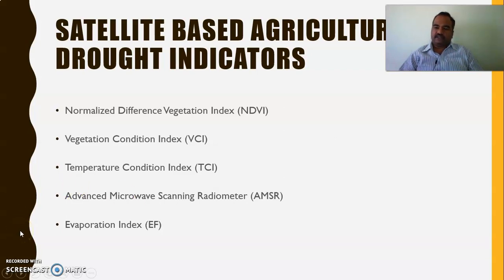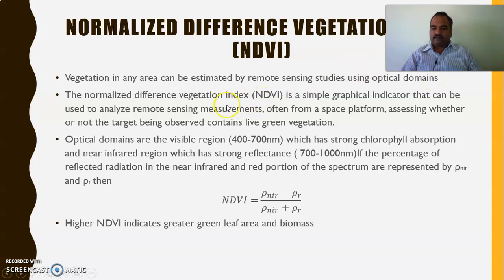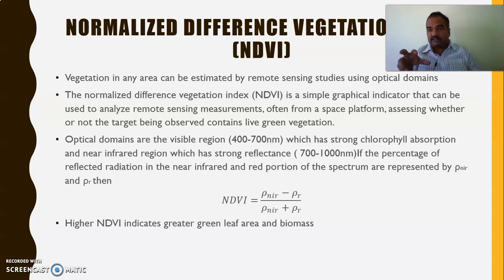The first indicator is the normalized difference vegetation index, generally referred to as NDVI. Since we have been employing satellite images to understand vegetation in any particular area, vegetation in any area can be estimated by remote sensing studies using optical domains. NDVI is a simple graphical indicator used to analyze remote sensing measurements, often from a space platform, assessing whether or not the target being observed contains live green vegetation. From the satellite, we capture pictures and based on the chlorophyll content observed, we can determine whether there is vegetation in that area.